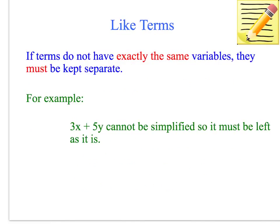If the terms do not have exactly the same variables, they must be kept separate. So you cannot combine terms that are not exactly the same. For example here, 3x and 5y, you can't simplify that any further. The expression just needs to be left at 3x plus 5y.